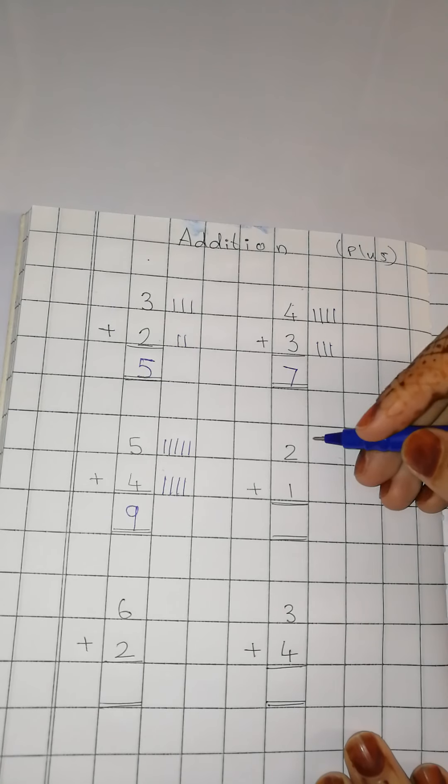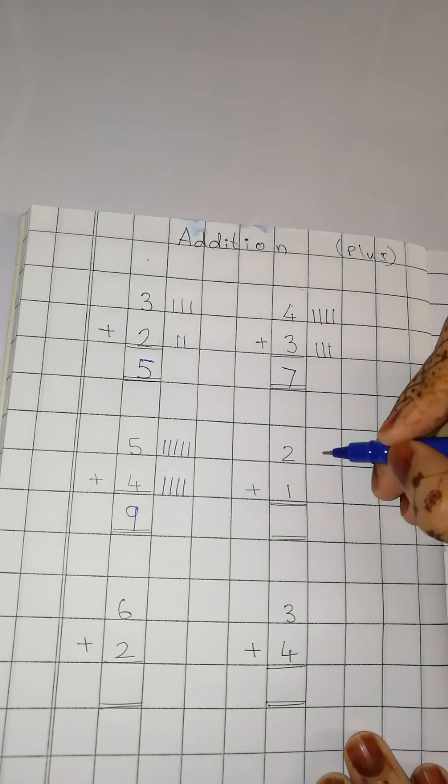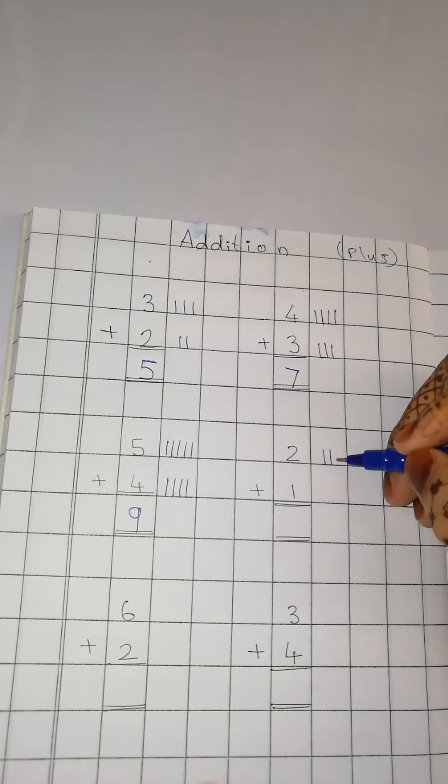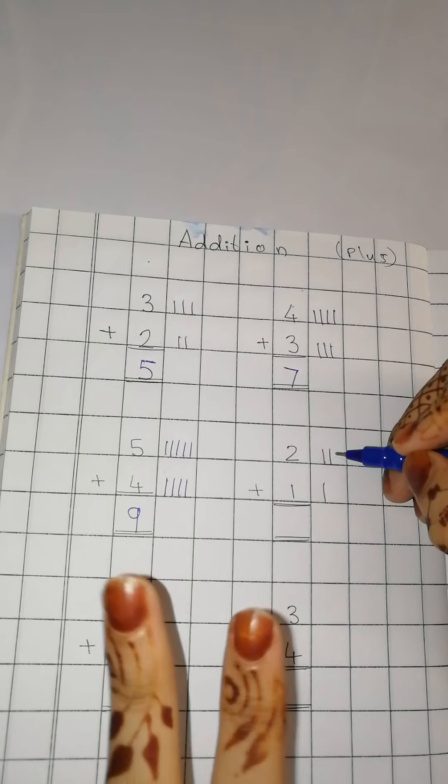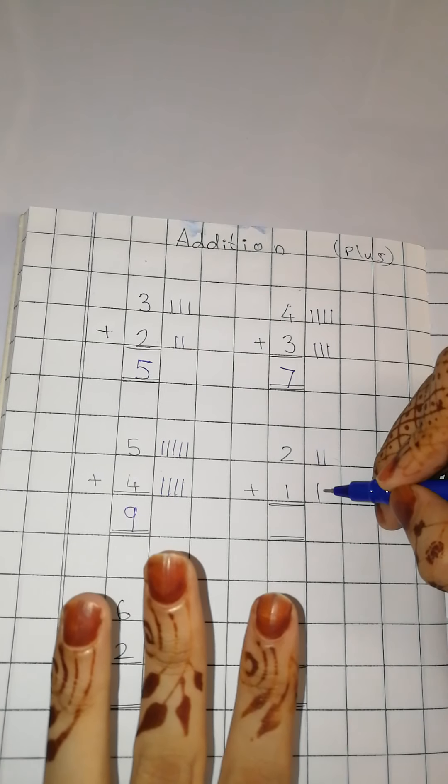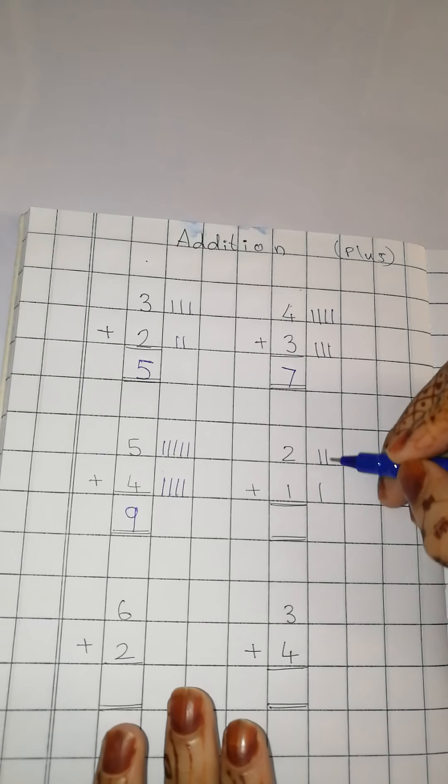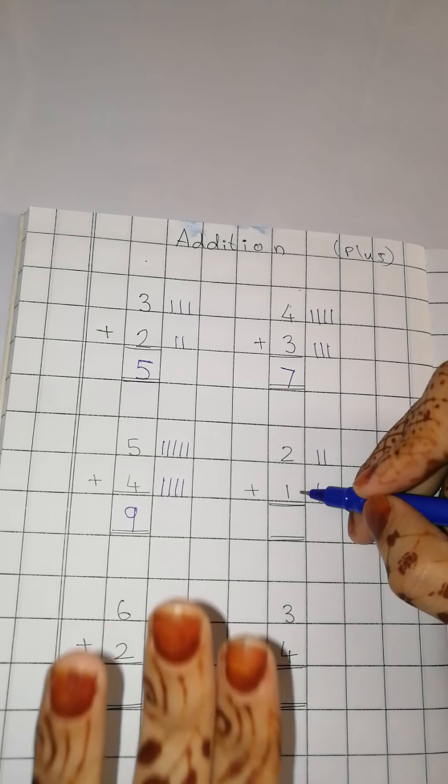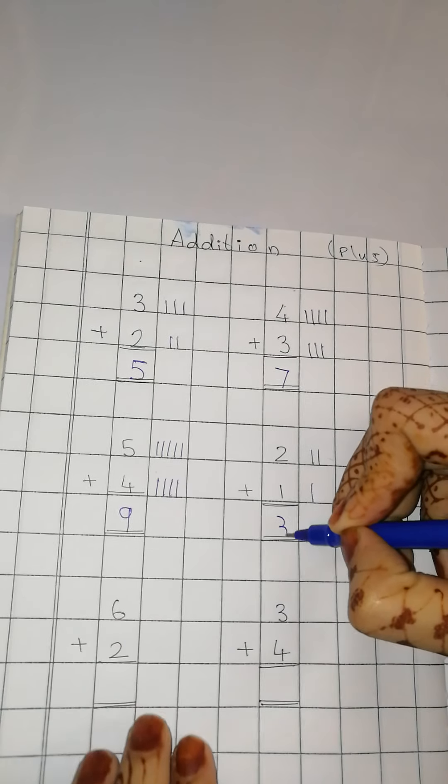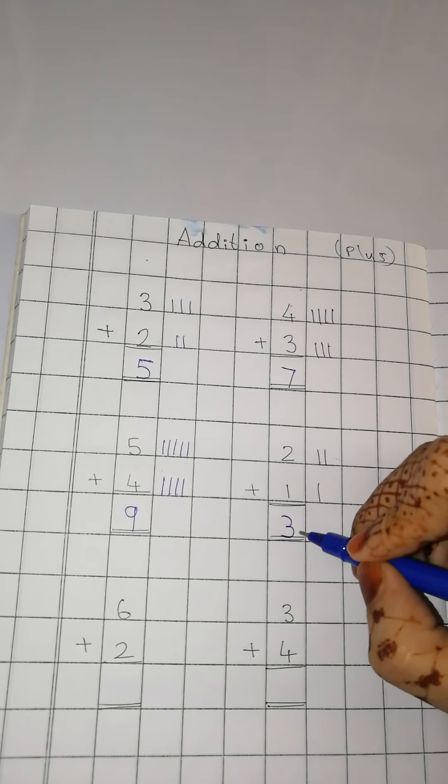Now let us do one simple one. How many lines are there? 2. And how many more lines? 1. So 2 plus 1. Kitne hoge? What comes after 2? Kitne lines dikhar hai aapko? Yes. 2 plus 1 is 3. Very good.